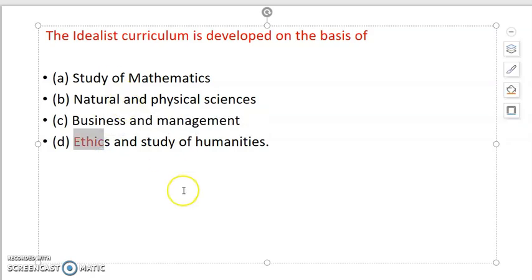So the answer is option D, that is ethics and study of humanities. Idealists will say humanity study, moral value, spirituality, in all these things we believe. Okay?